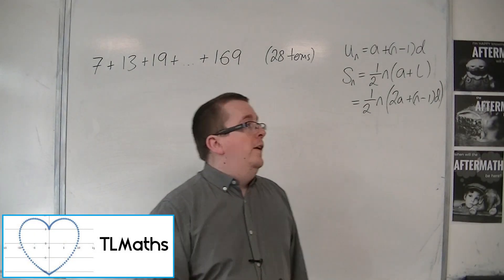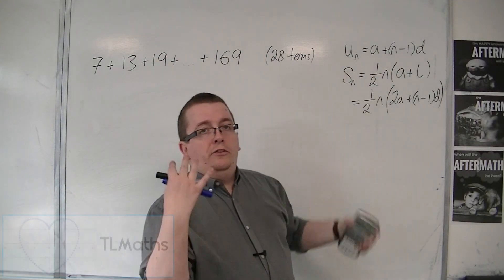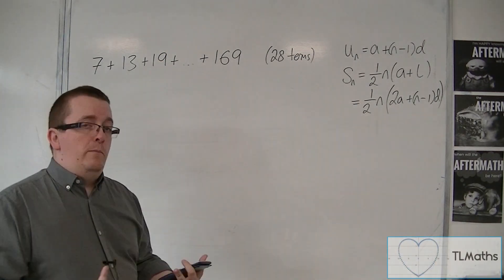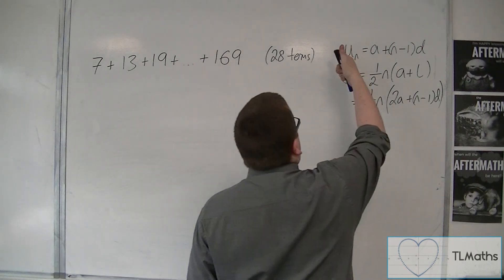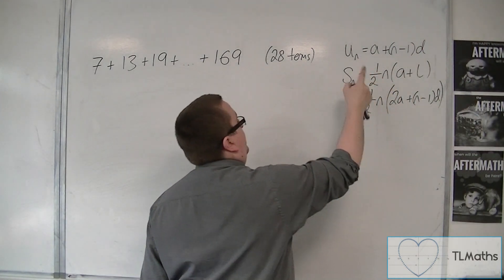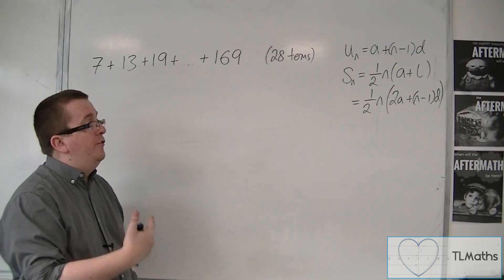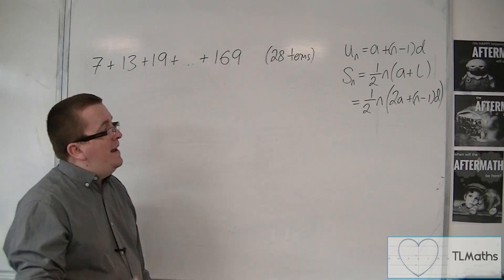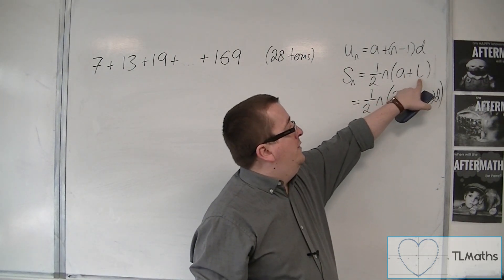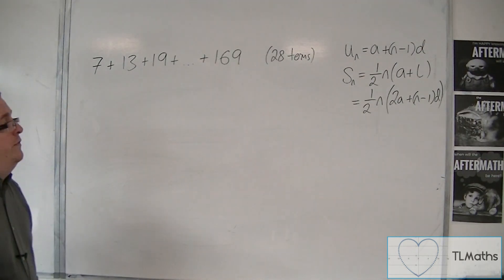So now we have three formulas. These are all in the formula booklet, and we've found where all three of these come from. We have the nth term of an arithmetic sequence, and we have two formulas for an arithmetic series — the sum of the first n terms. Depending on whether we've been given the last term or not, we need to use a and d, using the common difference.